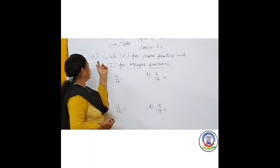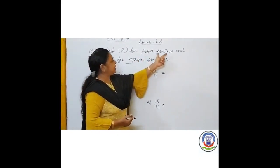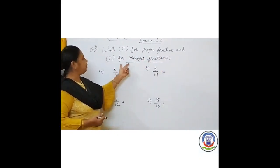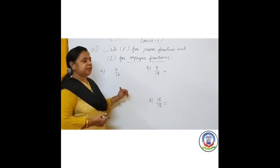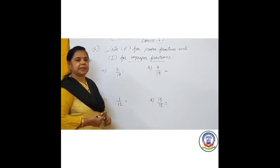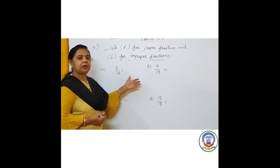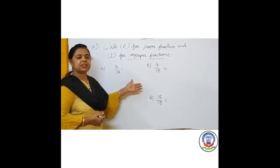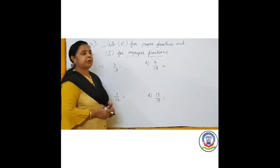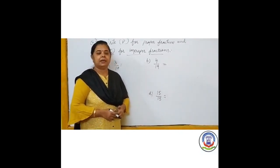Question number 3 is: write P for proper fraction and I for improper fractions. We have already seen what proper fractions and improper fractions are. Now we will review — what are proper fractions and what are improper fractions?